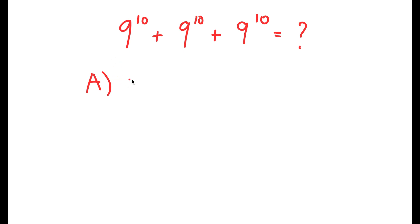So option A is 27 to the power of 30. Option B is 9 to the power of 30. Option C is 27 to the power of 10. And finally, option D is 3 to the power of 21.